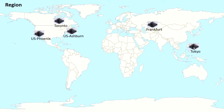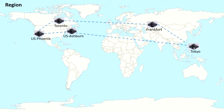All these data centers are connected with each other through Oracle FastConnect. When you enroll for OCI, by default you are given a region, or you can prefer a region based on your geopolitical or other needs. In some cases, like if you are working for a government organization, there might be a need that the data center should be within your country. Based on that, you will select which region you will have your cloud instance.